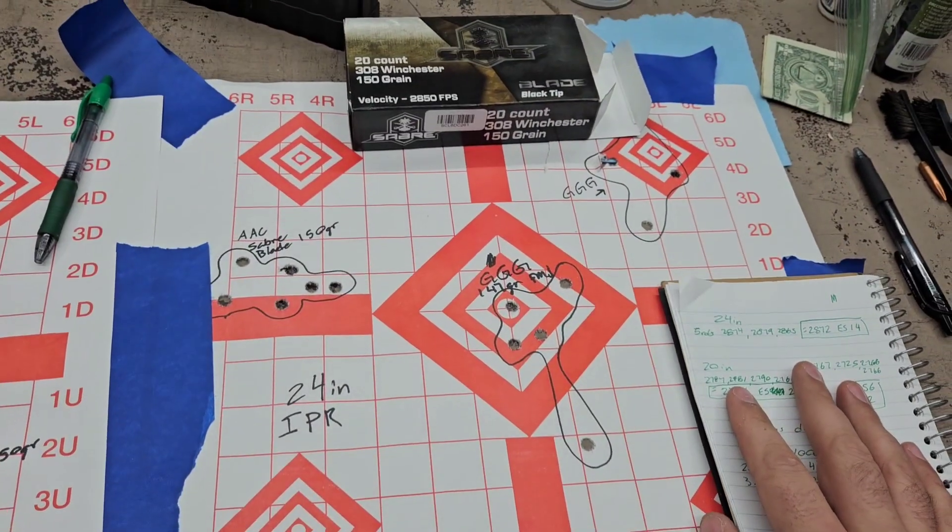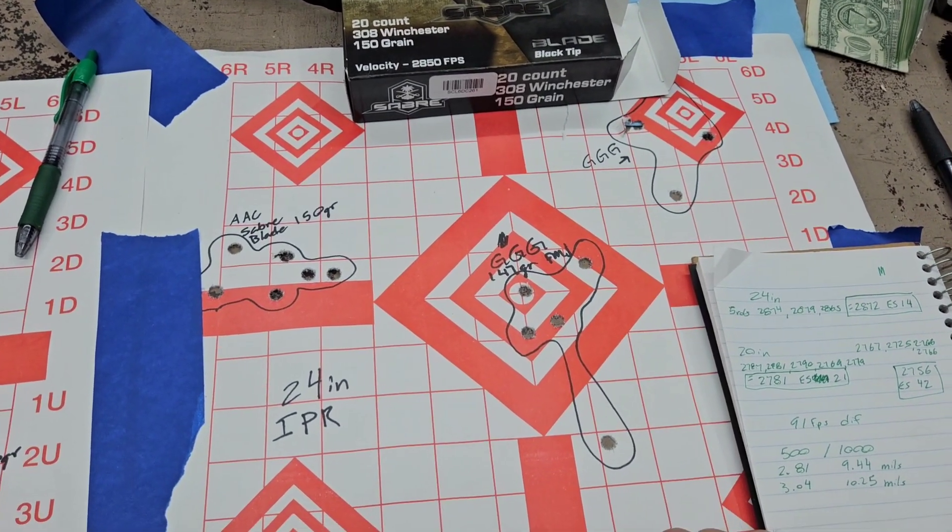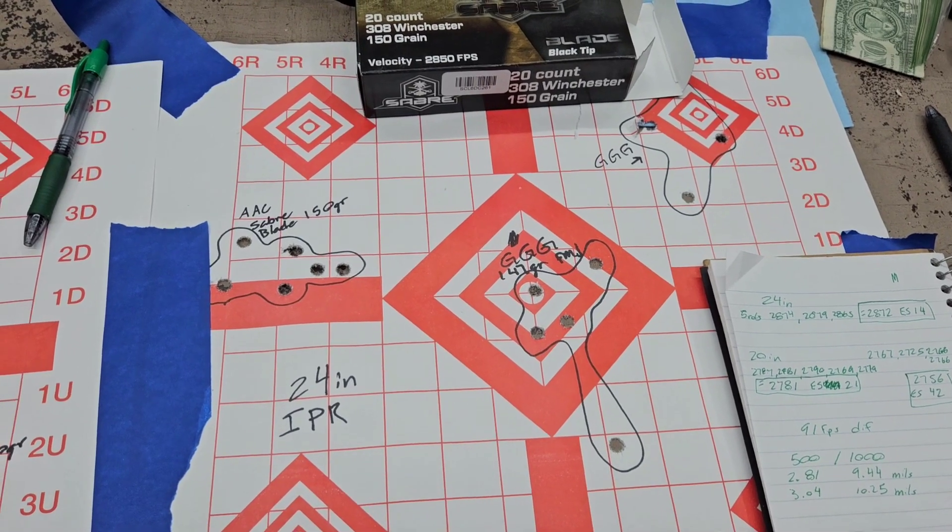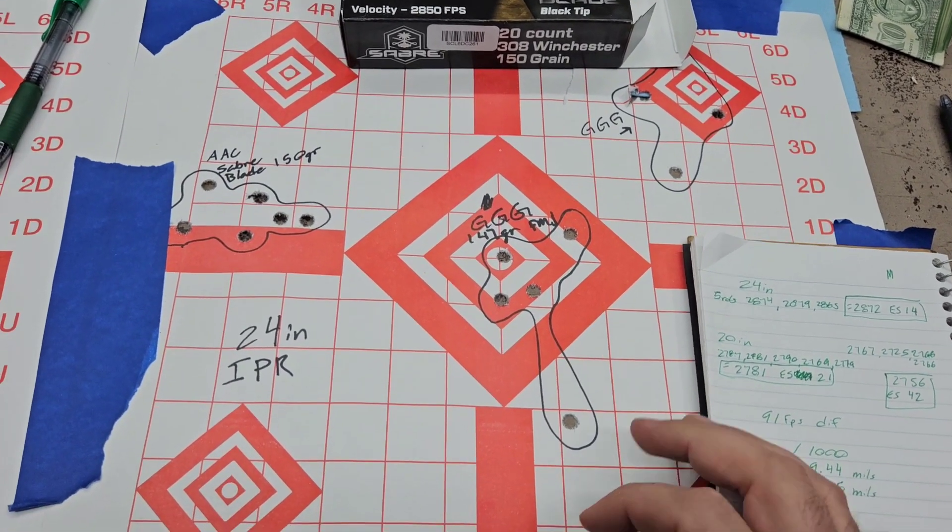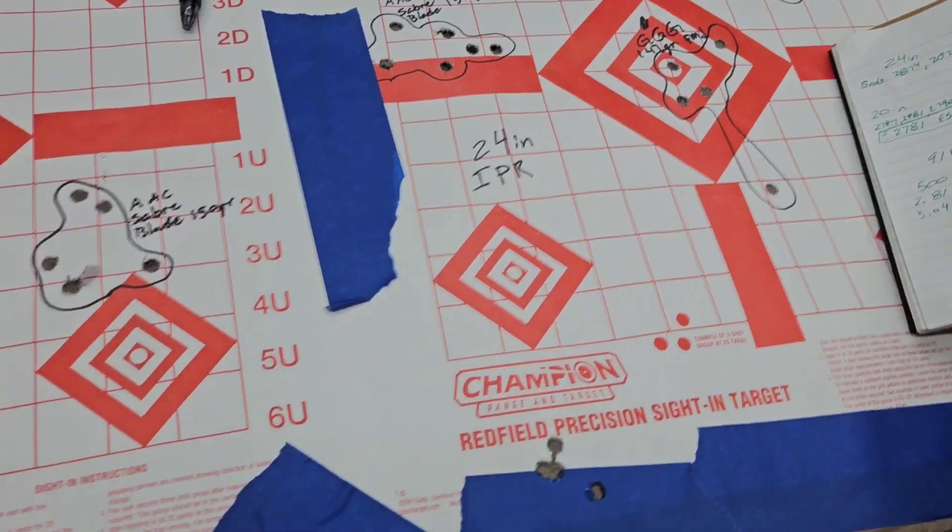Most boxes, or most ammo, will kind of beef up their velocity speeds to make them a little more impressive. But pretty close, pretty close.